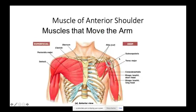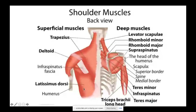The latissimus dorsi is the widest muscle of the back. Although it looks like a back muscle, it extends the shoulder — like pulling the cord to start a lawnmower, or doing a pull-up. It attaches to the bicipital groove and helps you do pull-ups or pull-downs at the gym.